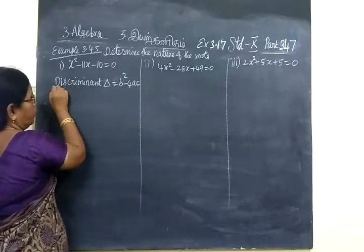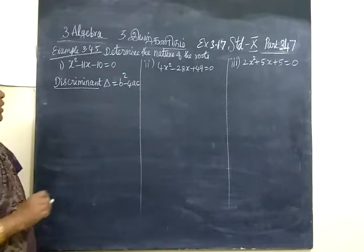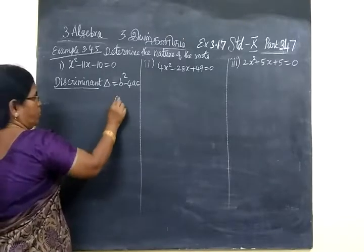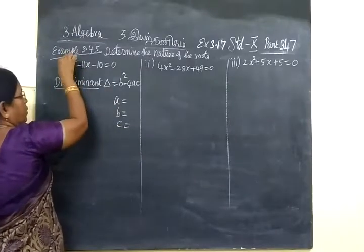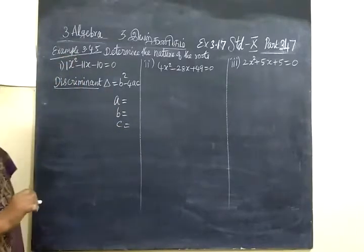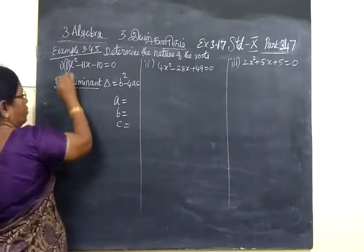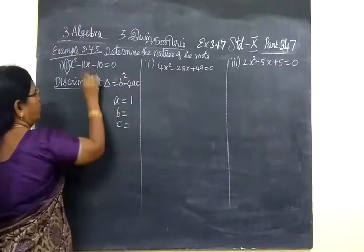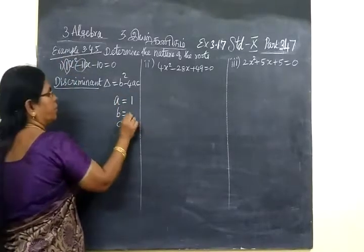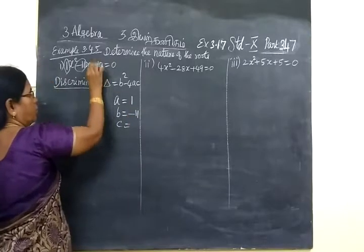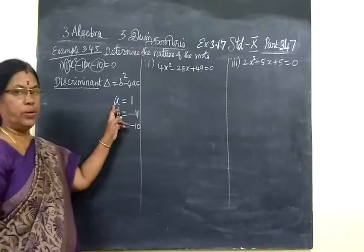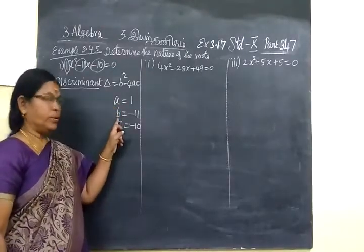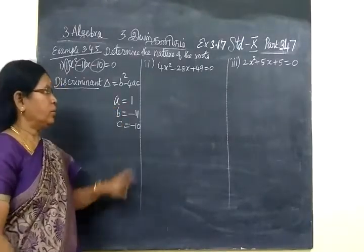For that, we want to find discriminant value delta, b squared minus 4ac. So, A equal to, B equal to, C equal to. Now, coefficient of x squared is A. Coefficient of x is B. Then constant term is C.